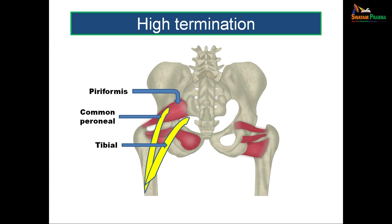Sometimes the sciatic nerve can terminate at a higher level — as high as within the pelvis. In that case, the two components emerge separately: the common peroneal component pierces the piriformis and emerges out, whereas the tibial component comes out of the greater sciatic notch below the piriformis. This is the case of high termination of the sciatic nerve.